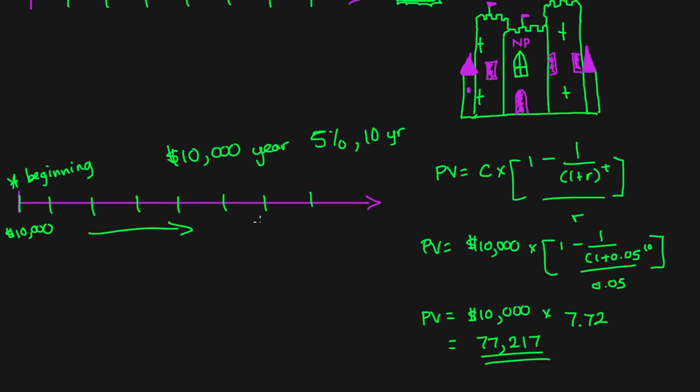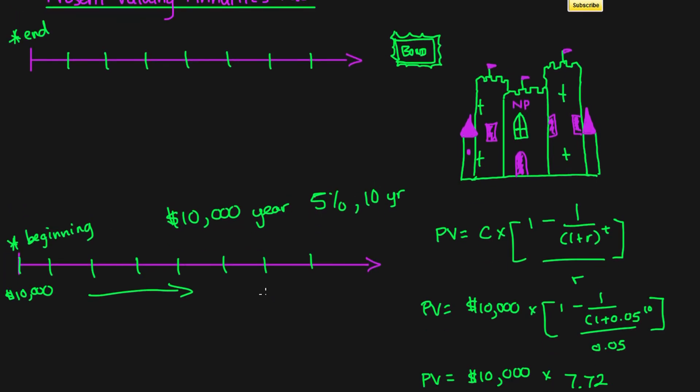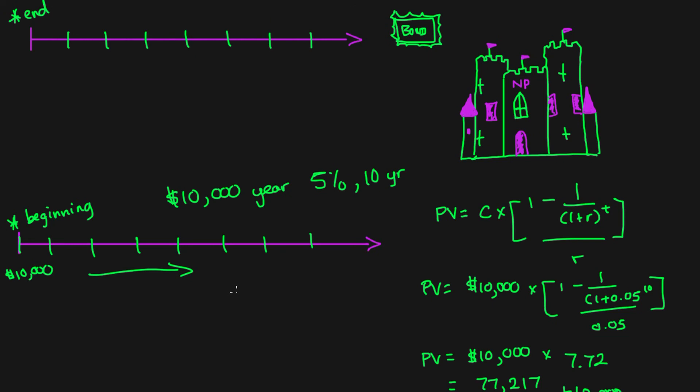That will be our annuity due present value, but we also need to add in the $10,000 because we didn't include the beginning cash flow. So in the end the present value of all those payments would be 87,217.